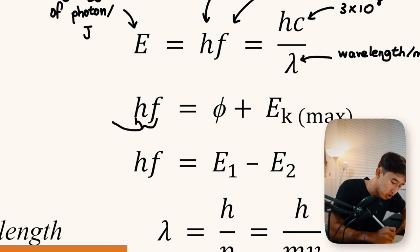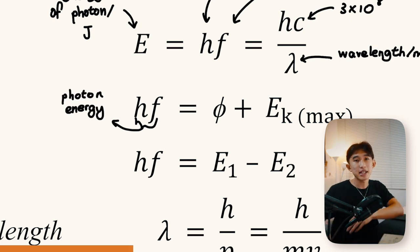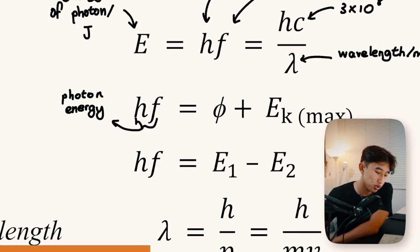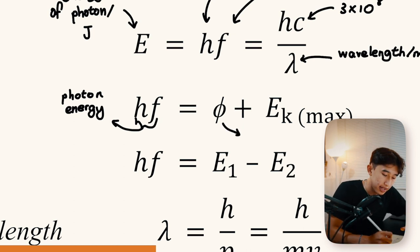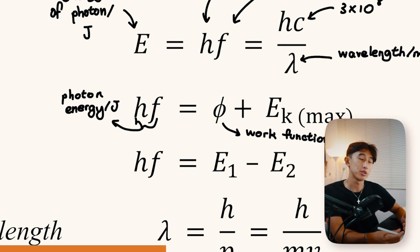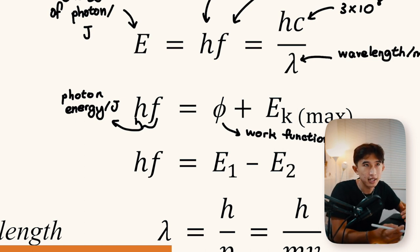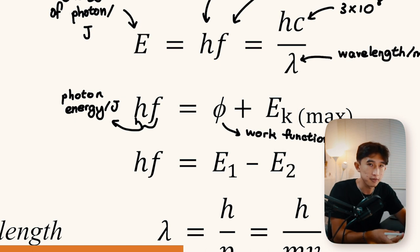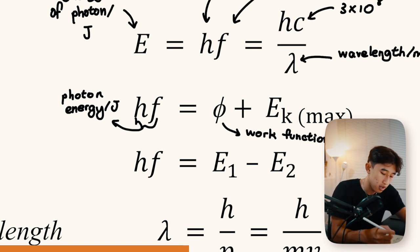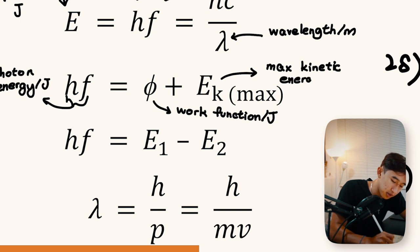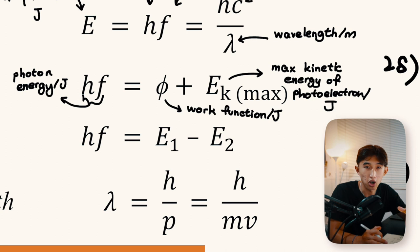Einstein's photoelectric effect equation is hf = φ + E_k(max). Here hf is the photon energy incident on the photoelectric surface. φ (phi) is the work function — the minimum energy needed for photoelectrons to be released from the metal surface, given in joules. The maximum kinetic energy of the photoelectron is also in joules, so all units are consistent.